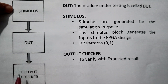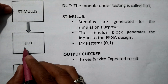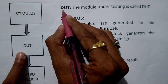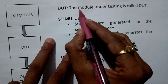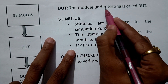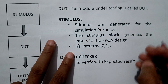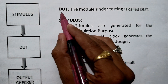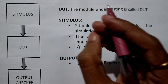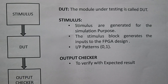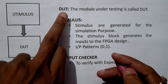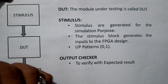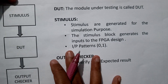Now let us start with the first and foremost important element — that is DUT, which stands for Design Under Test. The module under testing is called the DUT. So whatever VHDL code we write for any module, we can call it the Design Under Test. For example, if we have written VHDL code for an AND gate, then we can call the DUT as AND gate.